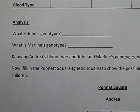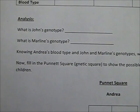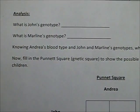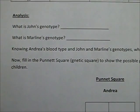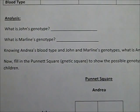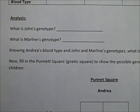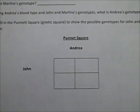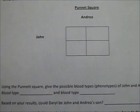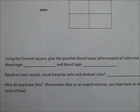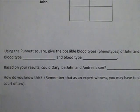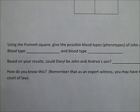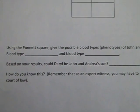Now that you've completed the data section, take a minute to do the analysis. Based on the information you found, what is John's genotype? Remember, a genotype has two letters — what two alleles does John have for blood? Answer the same for Marlene. You can figure out Andrea's blood type simply by knowing Marlene, her daughter's blood type. Once you have that, fill in the Punnett square for Andrea and John — this will tell you what blood types they can possibly have. When you finish, answer the questions at the bottom. The final question: could Daryl be John and Andrea's son? When you give the results, explain what you found in the Punnett square to support your data. When you're done, you will turn in both the pre-lab questions and the data.